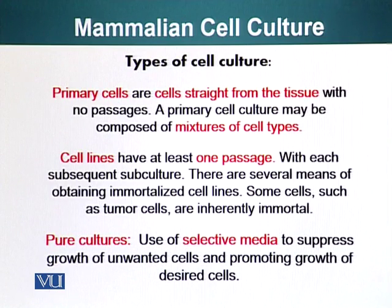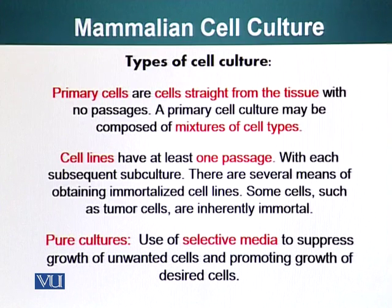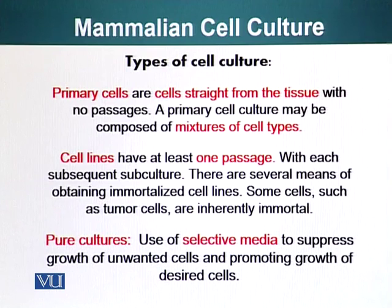Now let's talk about types of cell cultures. Primary cells are cells straight from the tissue — those are primary cultures, with no passage. Passaging is when you have grown cells in a container and the container gets full, so you remove and split these cells into two or four groups and put them in a new container. Primary cell culture may be composed of a mixture of cells; if you're taking a tissue from an organism, it can have different cell types. Fibroblasts, for example, can be present in most tissues.